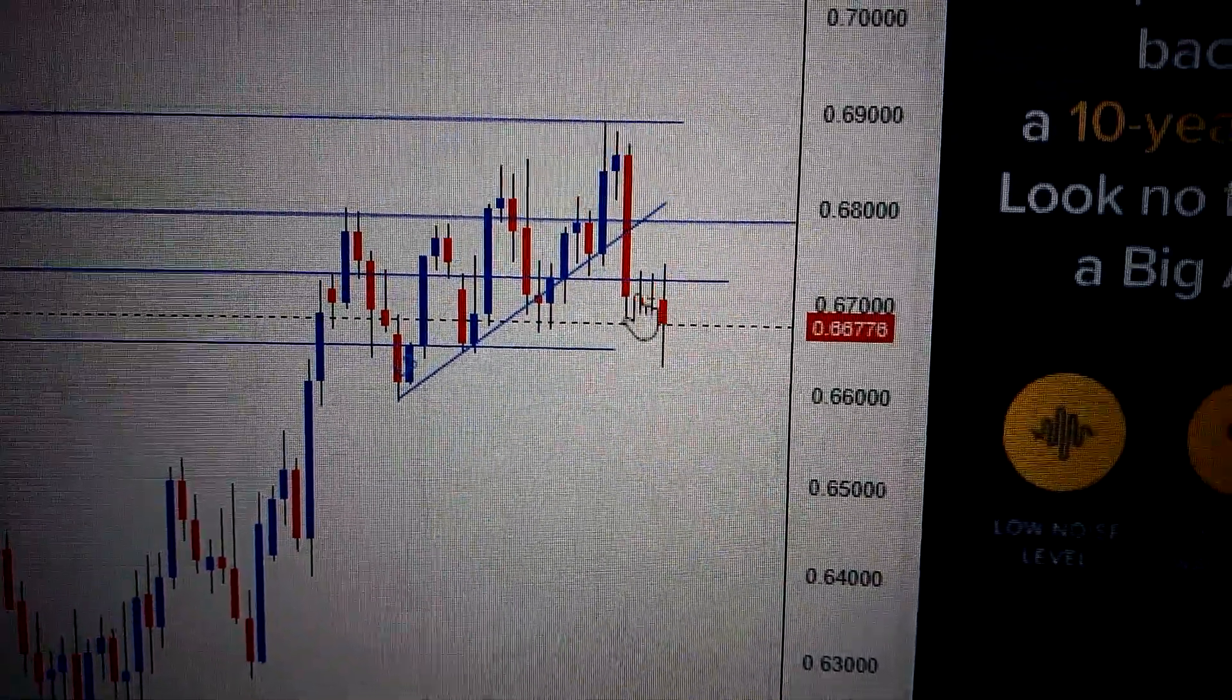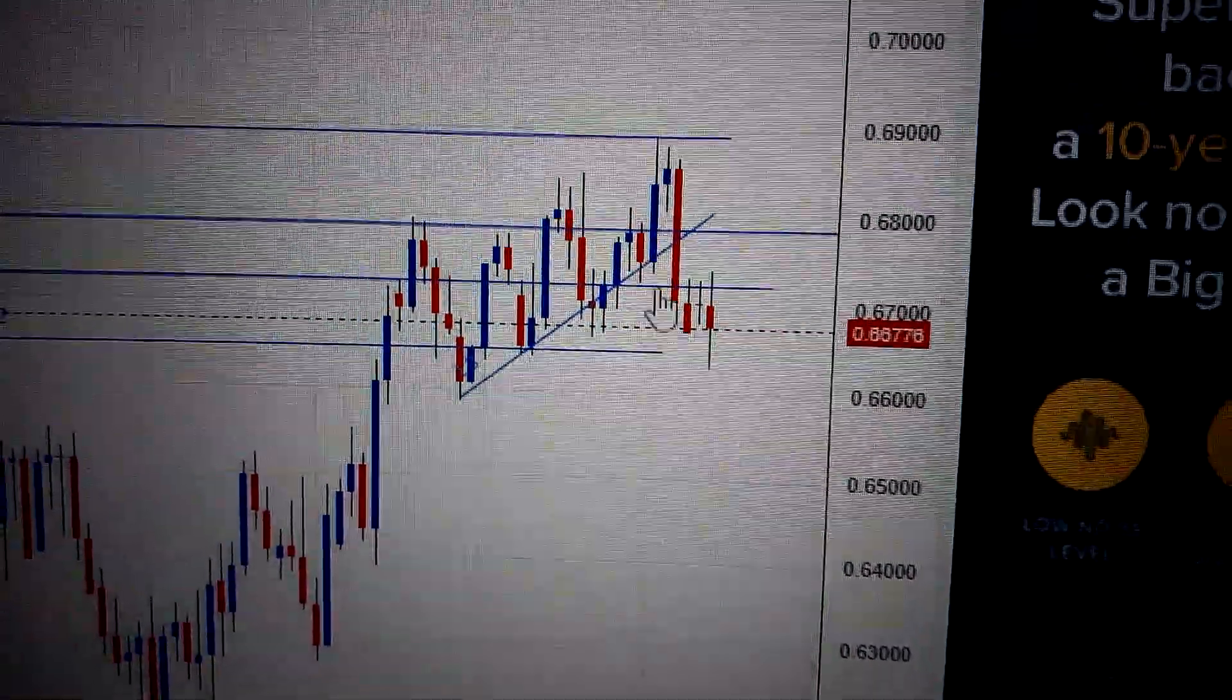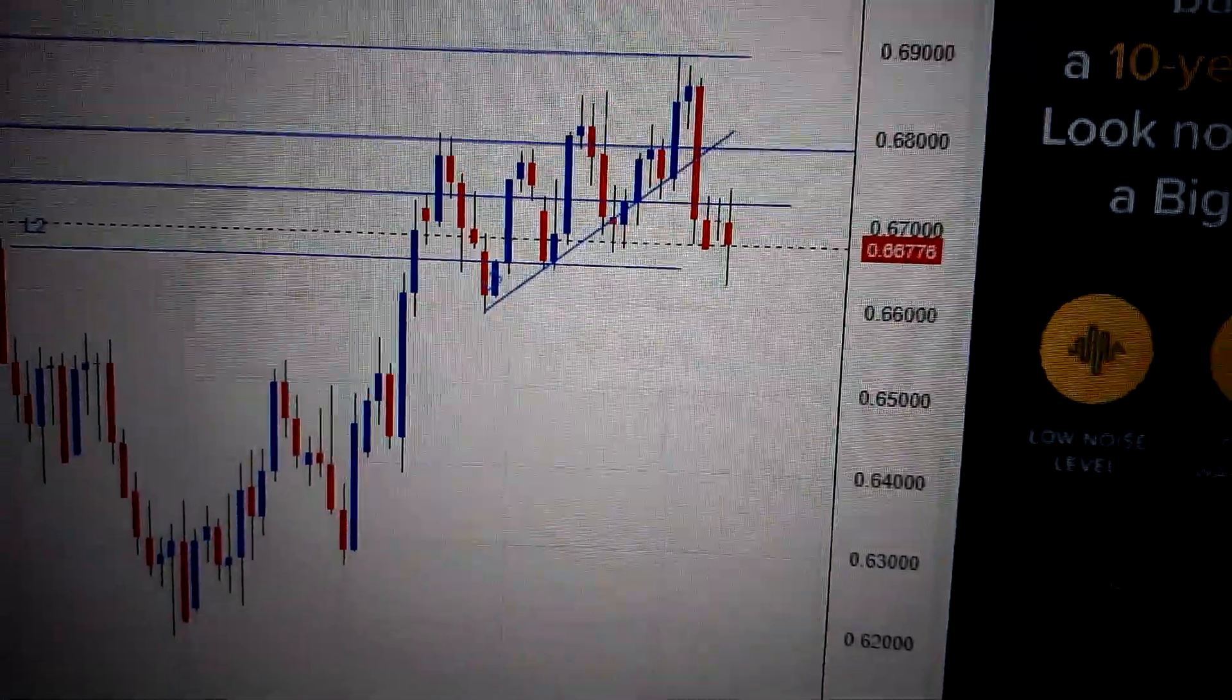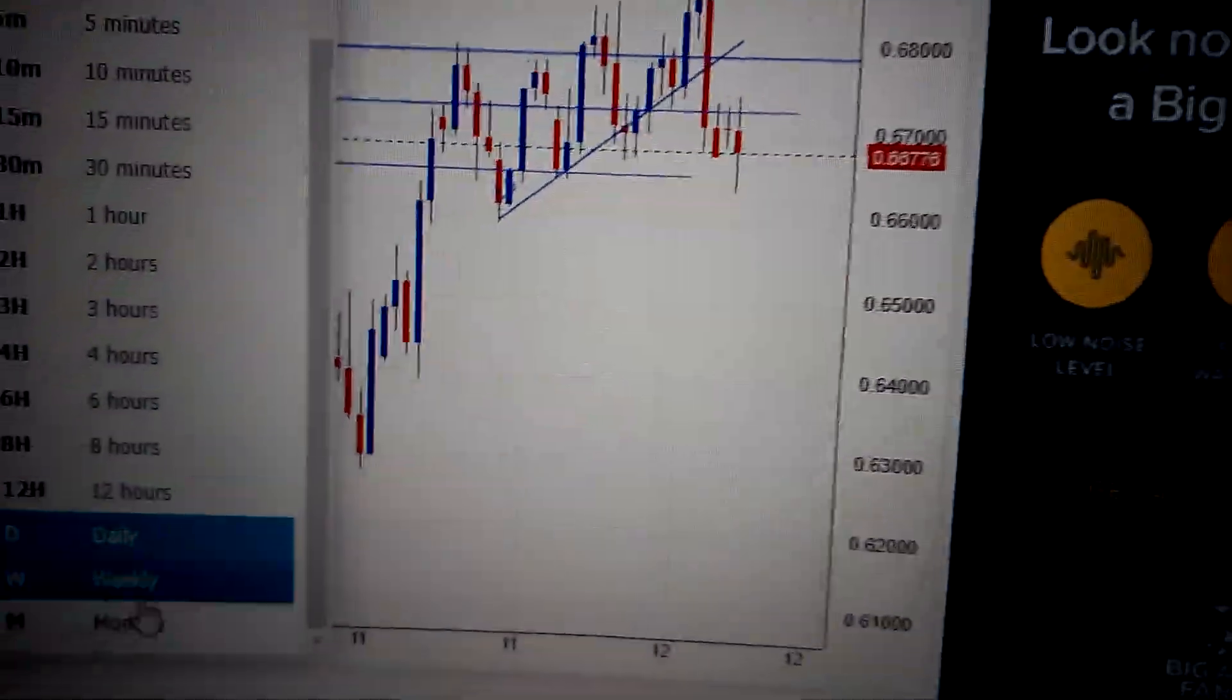We have stopped at this level for three days already, after dropping down from the uptrend line it formed several weeks ago. So in the midterm, there's no clear direction for the Australian dollar.